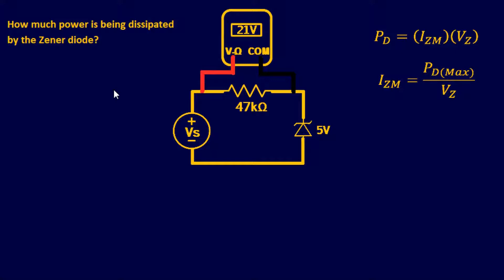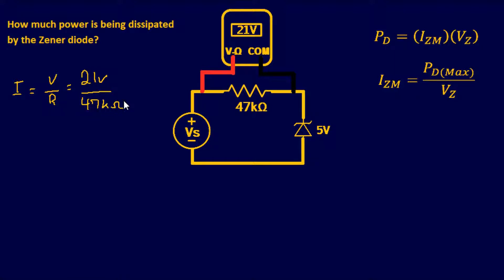We start with a relatively easy problem: one voltage source, one resistor, and one Zener diode in its typical reverse bias formation. We need to find how much power is dissipated by the Zener diode. We put a meter across the 47k ohm resistor and that gave us 21 volts. The first thing we find is current: I equals V over R, which is 21 volts over 47k ohms.